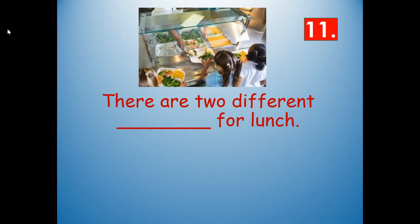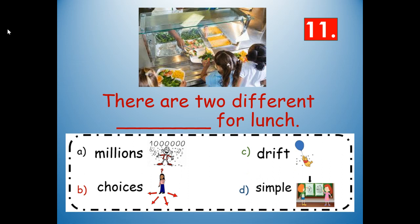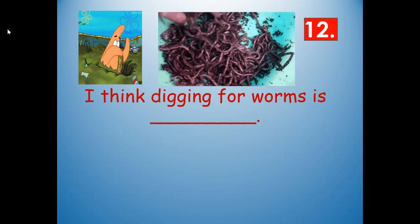Number 11: there are two different blank for lunch. Would it be millions, choices, drift, or simple? Choices — C-H-O-I-C-E-S. There are two different choices for lunch.